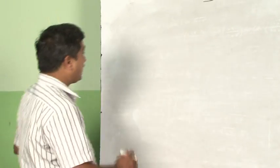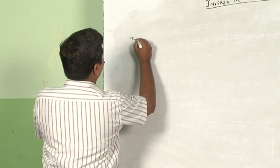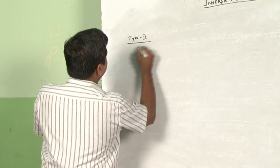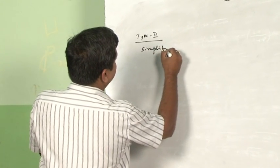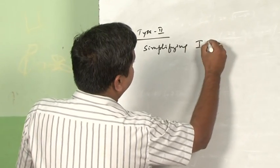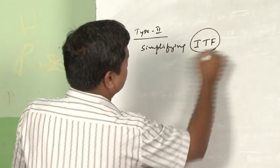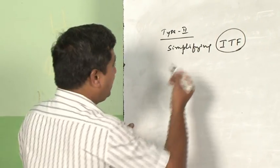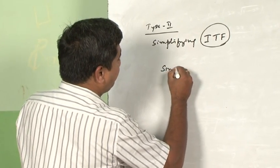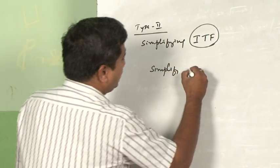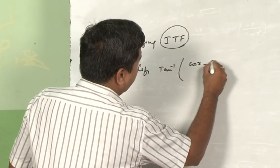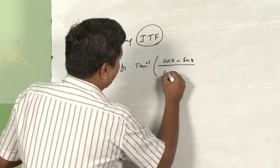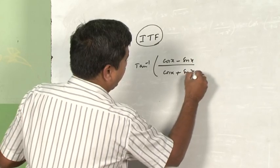Dear children, now we are going for the second type of problems. They are Type 2 problems — this is called simplifying inverse trigonometric functions. Let us take a problem: simplify tan⁻¹((cosx − sinx)/(cosx + sinx)).